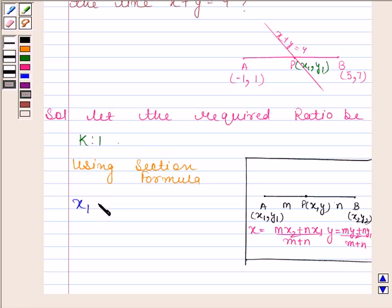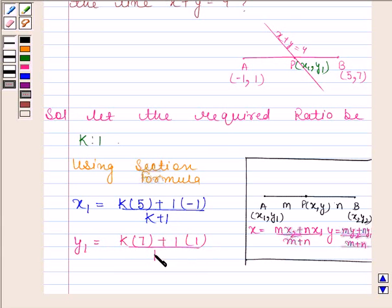x1 is equal to k into 5 plus 1 into (-1) upon k plus 1, and y1 is equal to k into 7 plus 1 into 1 upon k plus 1.